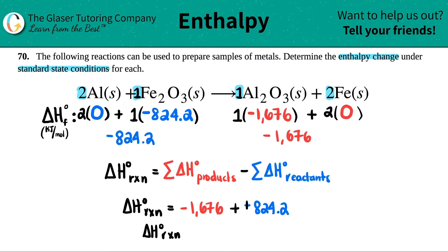Throwback to beginning math, right? Keep, change, change. See, concepts just always come back. Anyway, let's plug it in. Let's see what we get. Negative 1,676 plus 824.2.